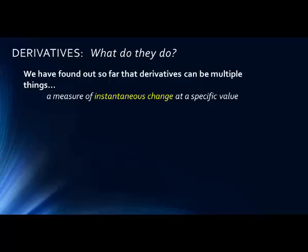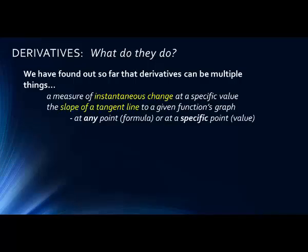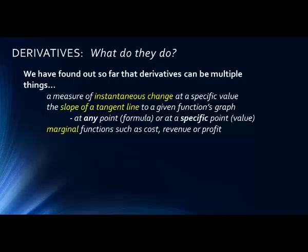We've been looking at derivatives all through Chapter 9. As a basic concept, a derivative is a measure of instantaneous change at a specific value. We also know that the derivative is the slope of a tangent line to a given function's graph. If we're looking for that slope at any point, the derivative will be a formula. If we're looking for the derivative at a specific x value or a specific point, that will be a numerical value.